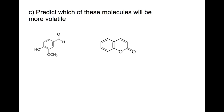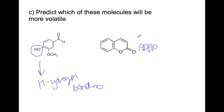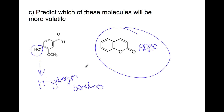Finally, we predict which molecule will be more volatile by looking at the strength of intermolecular forces. The molecule with an OH group has hydrogen bonding, whereas the other molecule has a polar region but no OH. Since hydrogen bonding is stronger, the molecule without it will have weaker intermolecular forces and therefore be more volatile.